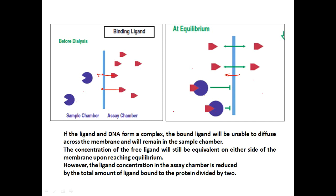This helps you understand if the ligand is able to bind to DNA or not, based on the diffusion of the ligand toward the DNA chamber. If the ligand is binding to DNA, the ligand concentration in the assay chamber is reduced by the total amount of ligand bound to the protein divided by two. You can also calculate binding constants because you know the concentrations of DNA and ligand.